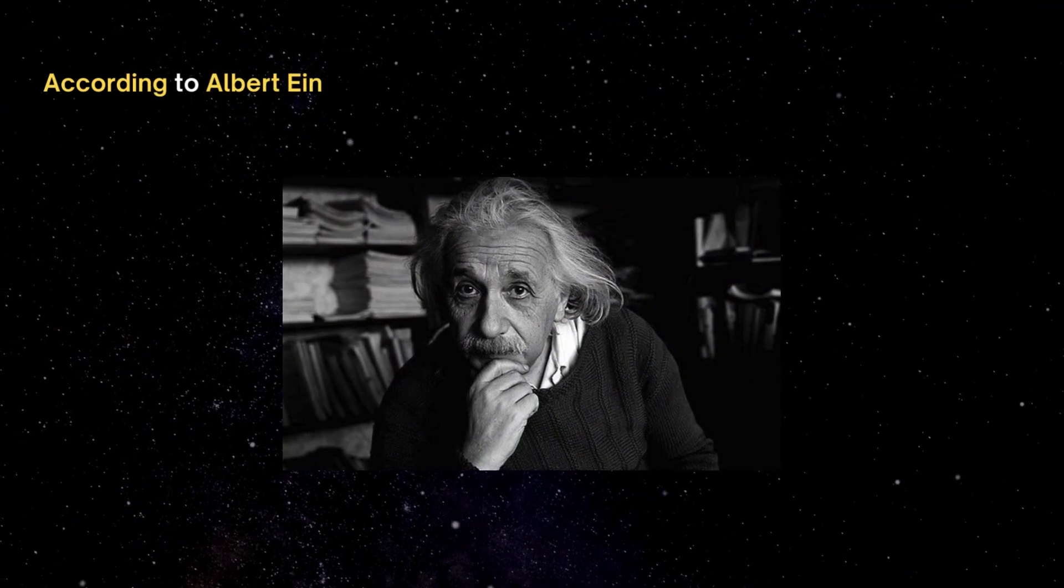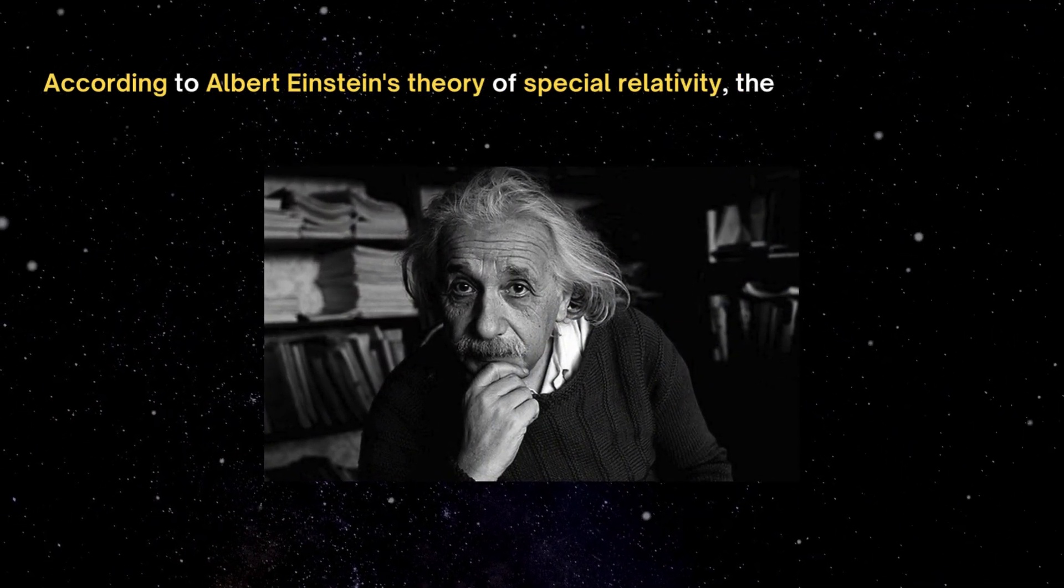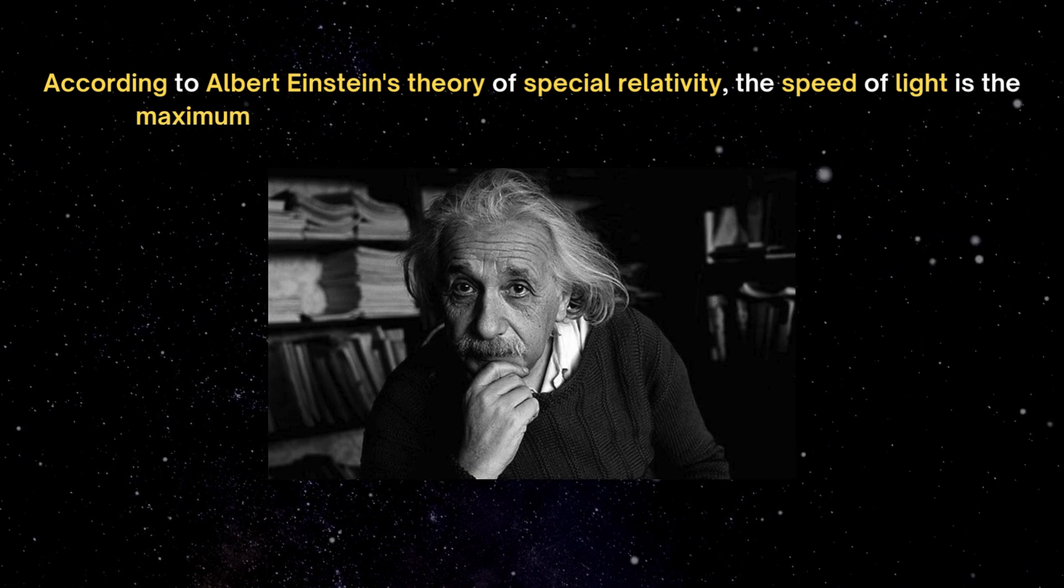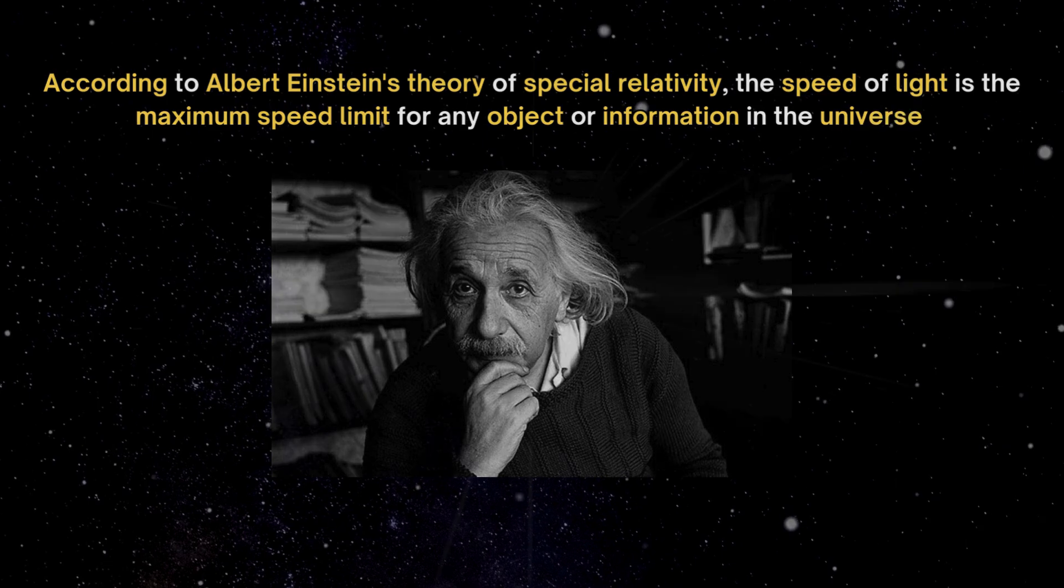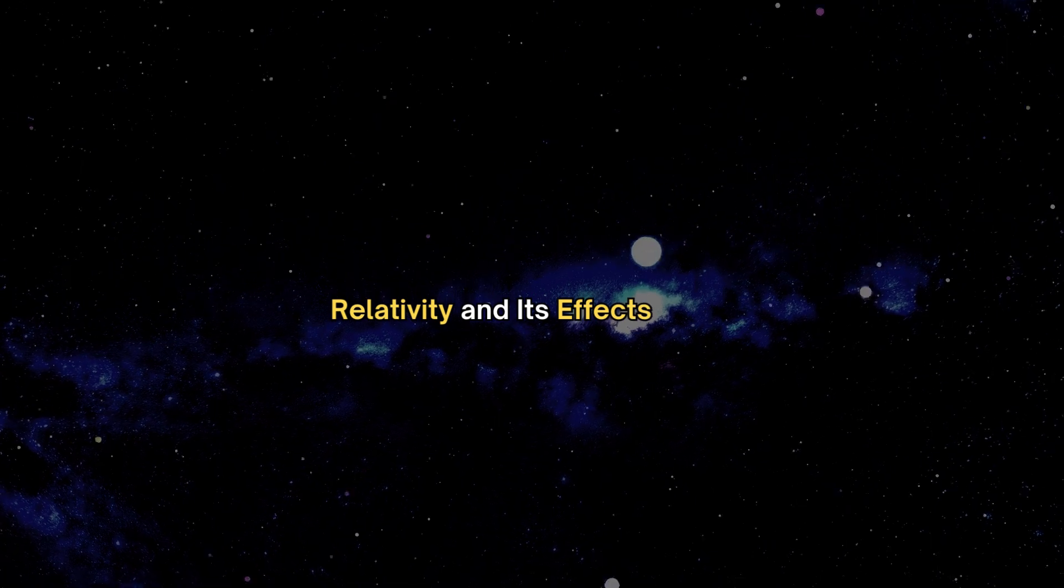According to Albert Einstein's theory of special relativity, the speed of light is the maximum speed limit for any object or information in the universe. But why is this speed so crucial?